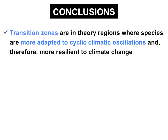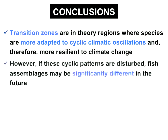Transition zones are expected to be more variable, so species there may be more adaptable because variability is the norm. But variability in these regions has historically been somewhat predictable. What the current trends suggest is that the variability remains but the predictability is changing, meaning animals will have to respond to more unpredictable cycles. On one hand these communities may be more resilient to climate change; on the other, if cyclic patterns are disturbed, there could be significant impacts on these coastal communities.